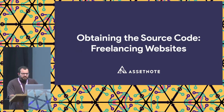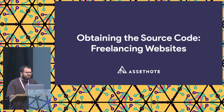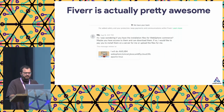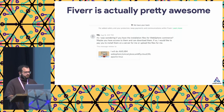Another technique is freelancing websites — this is a little more creative. On sites like Fiverr, if you find experts in the software you're auditing, you can convince them to give you a copy of the source code. I used this to get a copy of WebSphere Commerce, which is a very obscure but still quite popular deployed software. This has been successful for me in the past, especially when there's really no other way to get it.